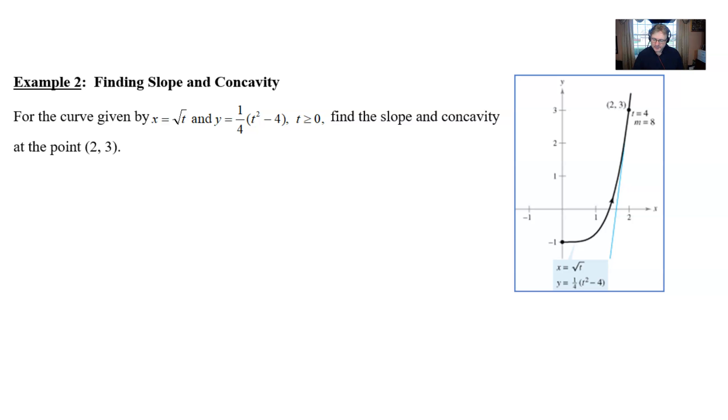We have Example 2. It says for the curve given by x equals square root of t and y equals one-fourth times quantity t squared minus 4, for t greater than or equal to 0, find the slope and the concavity at the point (2, 3). You might be wondering, I see the graph of this parametric equation, why do we need to do the analysis? Well, I wanted the graph there so that you can back up our findings. So it's very likely that if this problem is presented to you, you wouldn't necessarily have the graph, and you probably wouldn't have a graphing calculator that you could use to confirm. So you really have to know your calculus here. Notice there are two things that we have to do: slope and continuity.